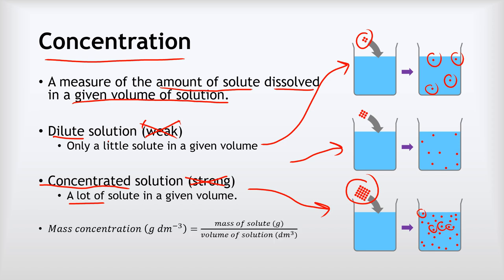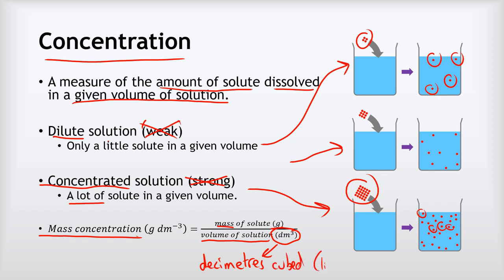Now, how we calculate concentration: we're talking about a type called mass concentration. The mass concentration of a solution is the mass of the solute in grams divided by the volume of the solution in decimetres cubed (dm³). Decimetres cubed is the scientific way of saying litres, so if you see dm³ and don't understand it, it's just another way of saying litre.